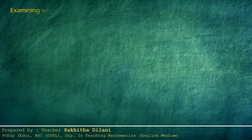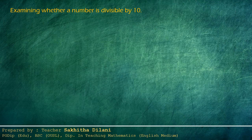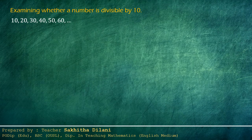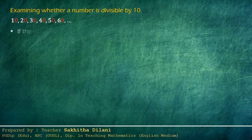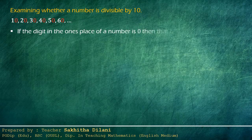Now let's see how to identify numbers which are divisible by ten without a remainder. Let's consider a few multiples of ten: ten, twenty, thirty, forty, fifty, sixty. Examine the ones place digit of these numbers. You can see that they are always zero. Therefore, if the digit in the ones place of a number is zero, then that number is divisible by ten without a remainder.